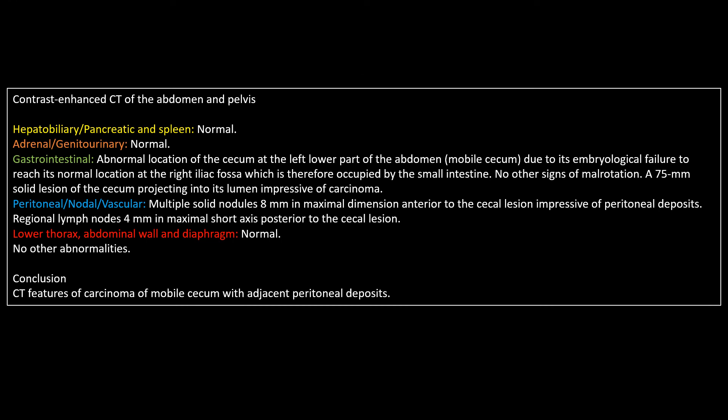Here is an example report for the present case — you can pause the video and read it at your ease. It addresses the organs with abnormalities: the colon, the peritoneum, the tiny lymph nodes, and the small intestine occupying the site of the mobile cecum. As agreed, the normal organs and anatomical domains are simply described as 'normal.' And don't forget to put your conclusion as clearly and as briefly as possible.